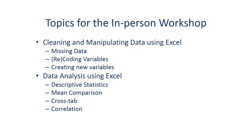Following these steps, you can have numeric data ready to be analyzed and a codebook that documents information for your key variables. This also prepares you well for the in-person workshop. In the workshop, we will discuss the next steps for quantitative data analysis: how to check data quality by looking at missing data, ways to reassign numerical values or create new variables, and how to analyze data using Excel. We will review what statistical methods are appropriate for different types of research questions, and I will demonstrate and practice together with you the more technical steps for each statistic using Microsoft Excel. See you in class!